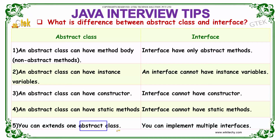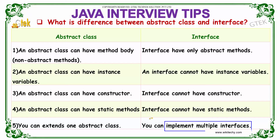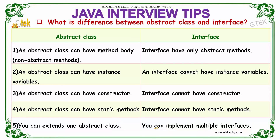You can extend up to one abstract class, whereas you can implement multiple interfaces. So here only one abstract class can be extended, whereas you have multiple interfaces to be implemented. So that makes the major difference between abstract class and interface.